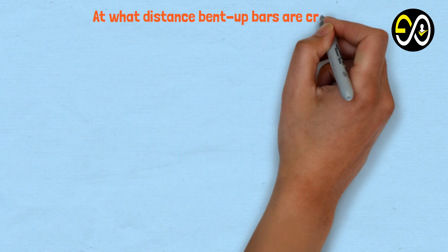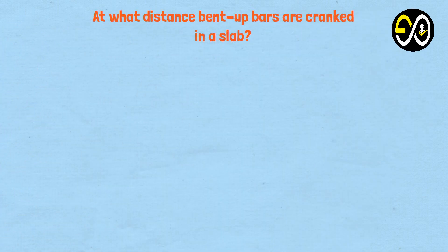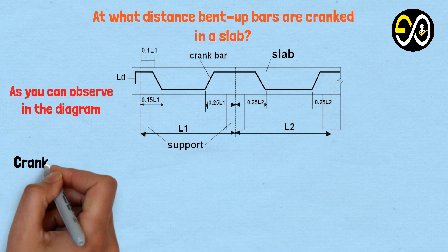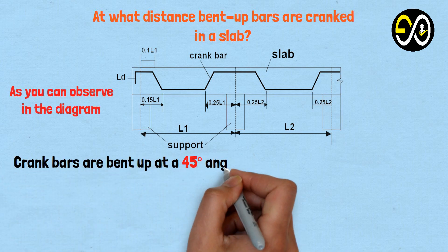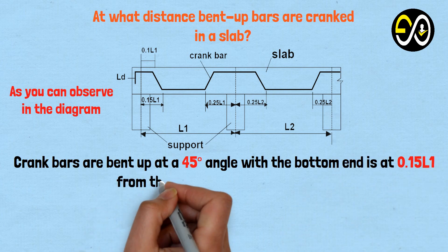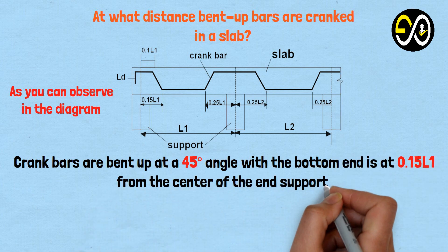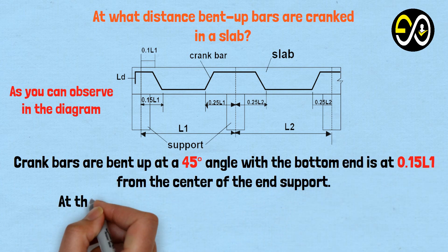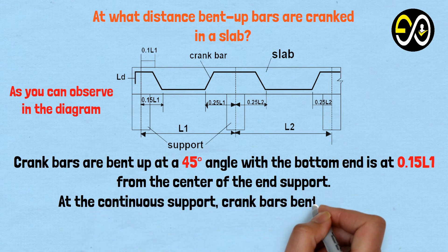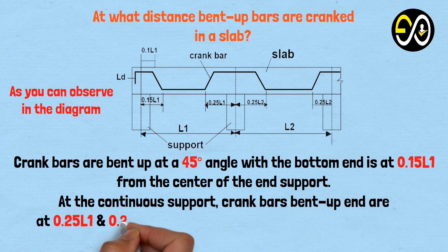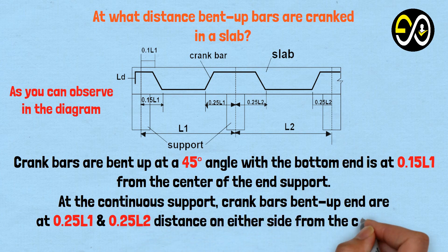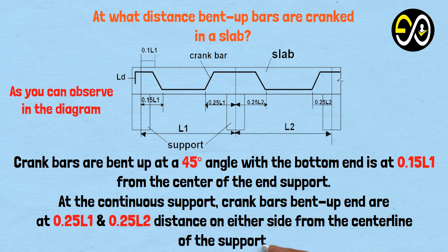At what distance are bent-up bars cranked in a slab? Crank bars are bent up at a 45-degree angle with the bottom end at 0.15 times length L1 from the center of the end support. At the continuous support, the crank bar bent-up ends are at 0.25 times L1 and 0.25 times L2 distance on either side from the center line of the support.